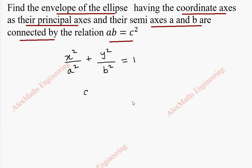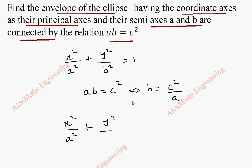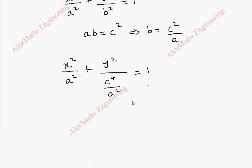Now we have ab equal to c square. From this, we can replace b as c square by a. When we substitute in the ellipse equation, we get x square by a square plus y square by b square, which becomes c power 4 by a square, equal to 1. This can be rewritten as x square by a square plus y square times a square by c power 4, equal to 1.